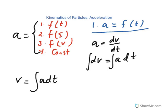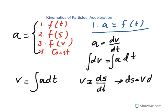Using the initial condition, you can find the constant of integration and then have velocity as a function of time. You can go further — since velocity is the derivative of position with respect to time, you can write ds equals v dt, then integrate to get s equal to the integral of v dt. It's very straightforward.